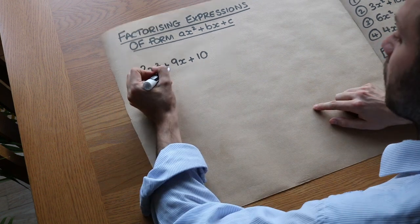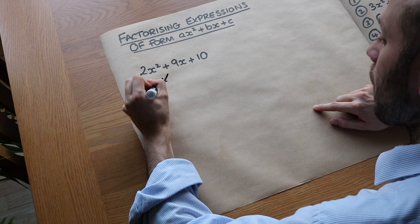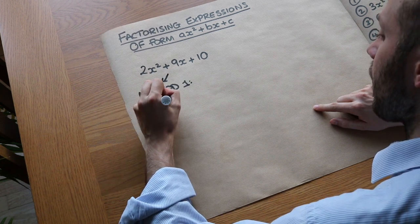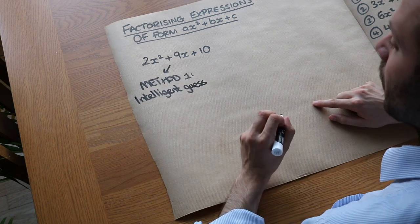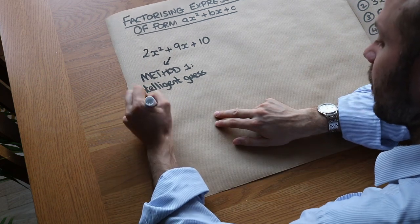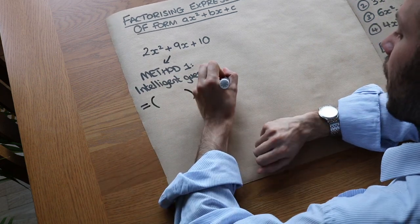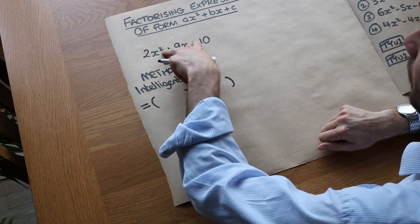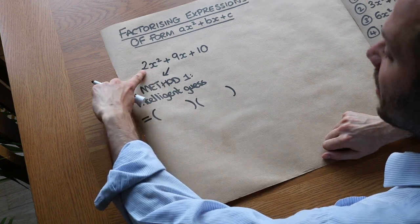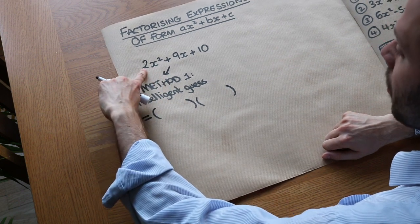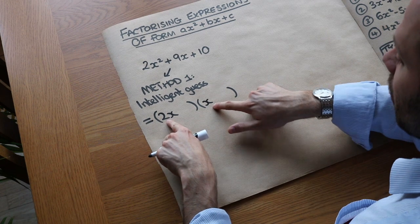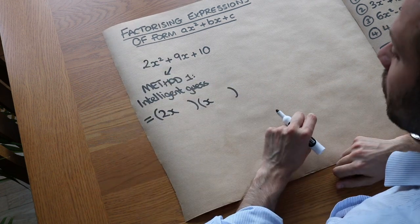There are two methods we'll explore to factorise this. Method one is to just intelligently guess by thinking about expanding two brackets but backwards. We put two brackets and think about what goes into those brackets such that expanding would give our expression. First let's think about the 2X squared — how might we get that in the expansion? Well, it's probably going to be 2X multiplied by X.